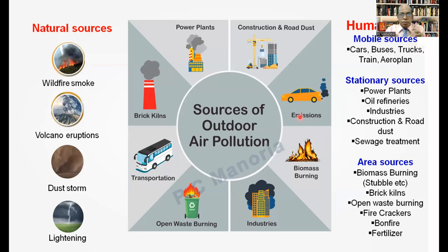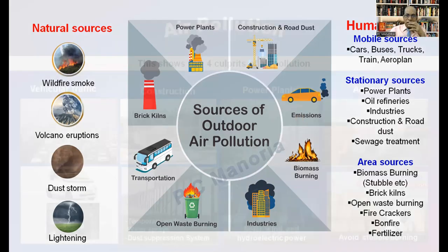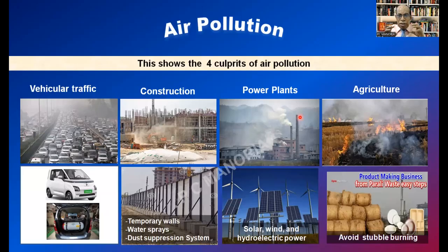Occasionally, we have natural sources like wildfire smoke, volcano eruption, dust storm, and lightning. These are the four major culprits of air pollution: vehicular traffic, which is rampant in metros; construction; power plants; and agriculture, including stubble burning.